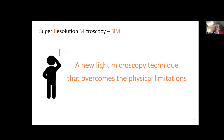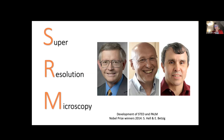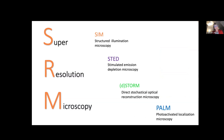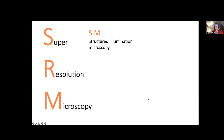We were fortunate to get a super resolution microscope. This is a new type of light microscopic technique that overcomes the physical limitation given by Ernst Abbe. We use the super resolution microscope called SIM. Super resolution microscopy was developed by scientists who received the Nobel Prize in 2014, and they developed different types of techniques such as STED, STORM, and PALM. We use SIM, which stands for Structured Illumination Microscopy.